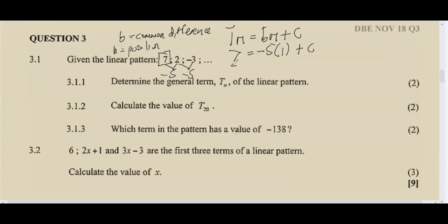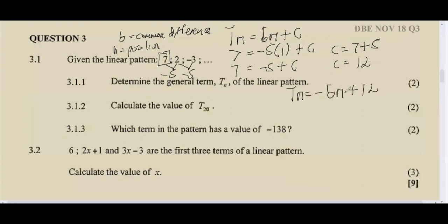So: 7 = negative 5(1) + c, which gives us 7 = negative 5 + c, so c = 7 + 5 = 12. Therefore our general term is tn = negative 5n + 12. When writing the general term you leave n as a variable — n represents the position.